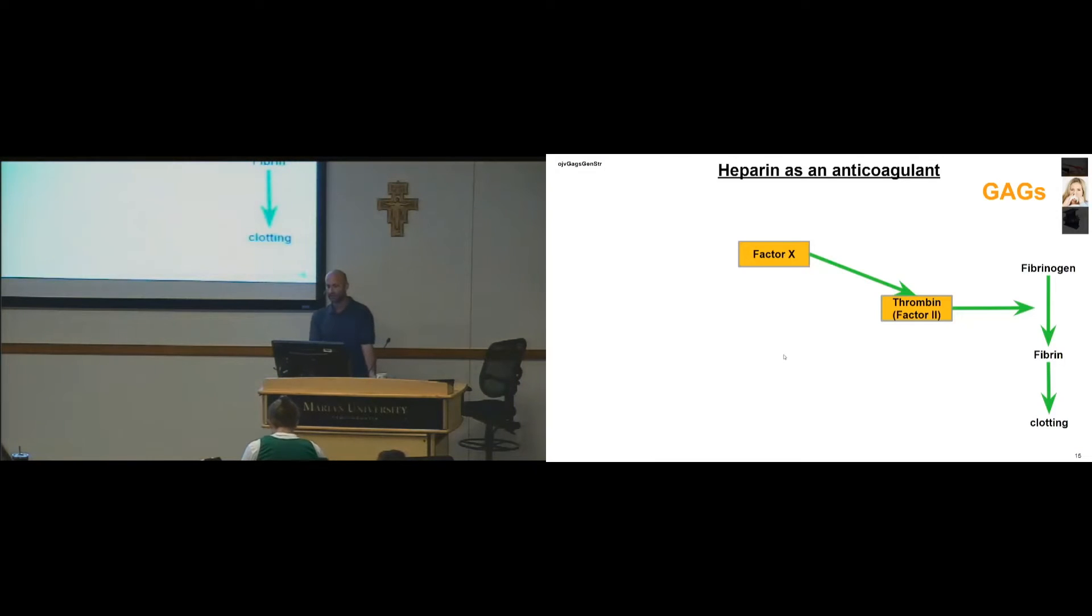Okay, a quick review of coagulation. So you're going to definitely get this later. Basically, you have Factor X activates thrombin, which creates fibrin from fibrinogen, which causes clotting.